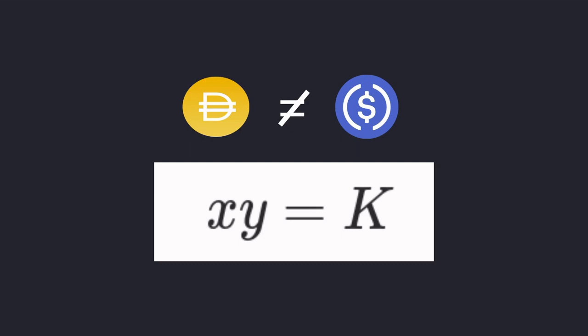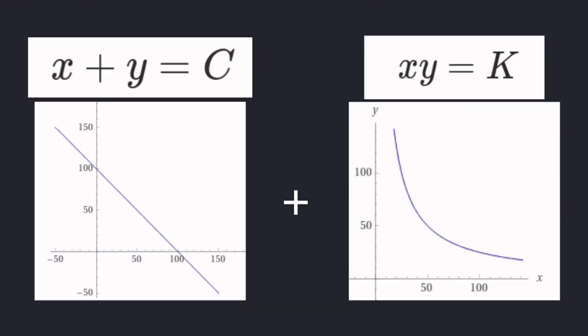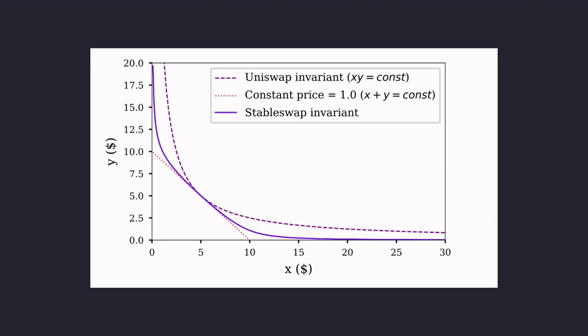And we can do that by using the equation x times y equals k. The graph will look something like this. Basically, this graph says that the less token there is, the more expensive it gets. Now Curve Finance combines these two graphs. The constant sum curve x plus y equals c, and the constant product curve x times y equals k. And you'll get a curve that is flat in the middle and behaves more like Uniswap on the extreme ends.